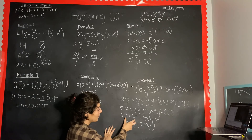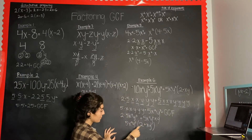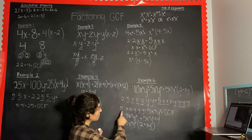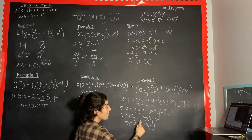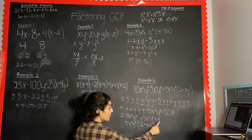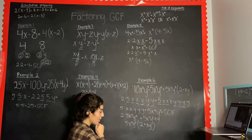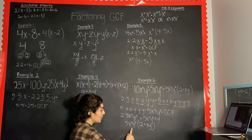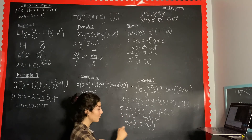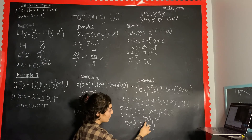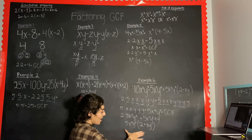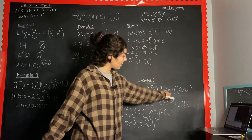Once we have our GCF of 5x²y³, we use regrouping to rewrite the expression. We have 5x²y³ times 2 plus 5x²y³ times xy. Pull out the GCF: 5x²y³ times (2 plus xy). Dividing the first term by the GCF gives 2, and dividing the second term gives xy. So the final answer is 5x²y³(2 plus xy).